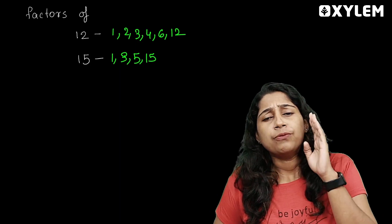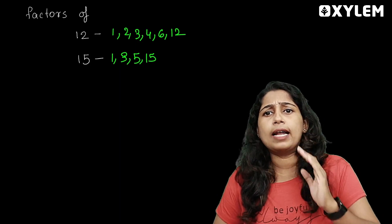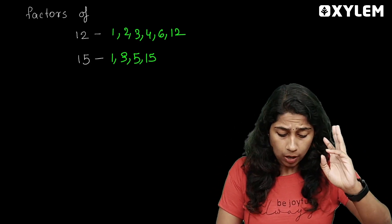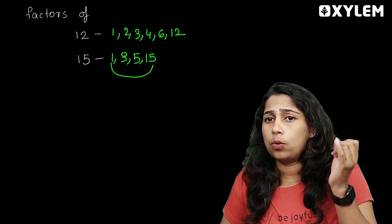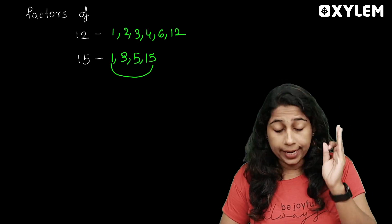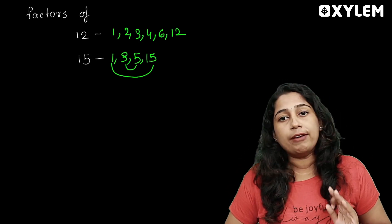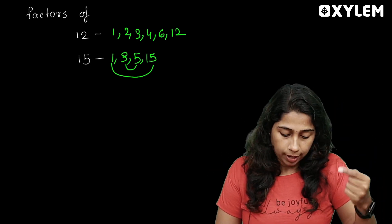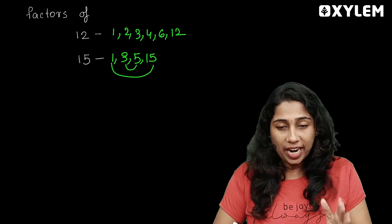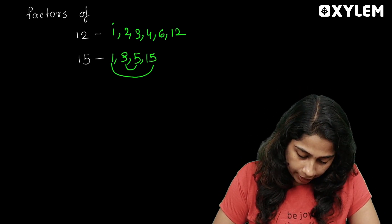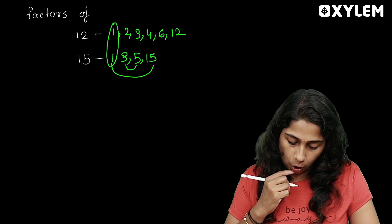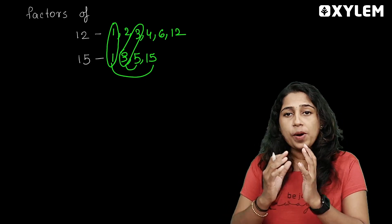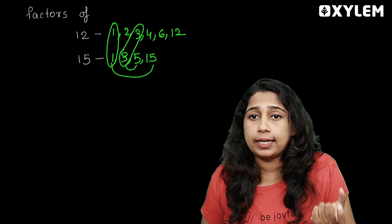What multiplication table gives 15? 1 × 15, 2 × 15? No. 3 × 5 is 15. 5 × 3 is 15. 15 × 1. So: 1 is common here, and 3 is common here. Here is 1 common, here is 3 common — these are common factors.